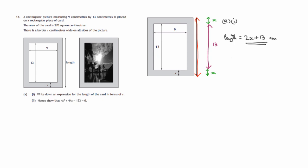So let's now move on to part A2. Hence, show that 4x² + 44x - 153 = 0. So what other information have we got? We've got the area.